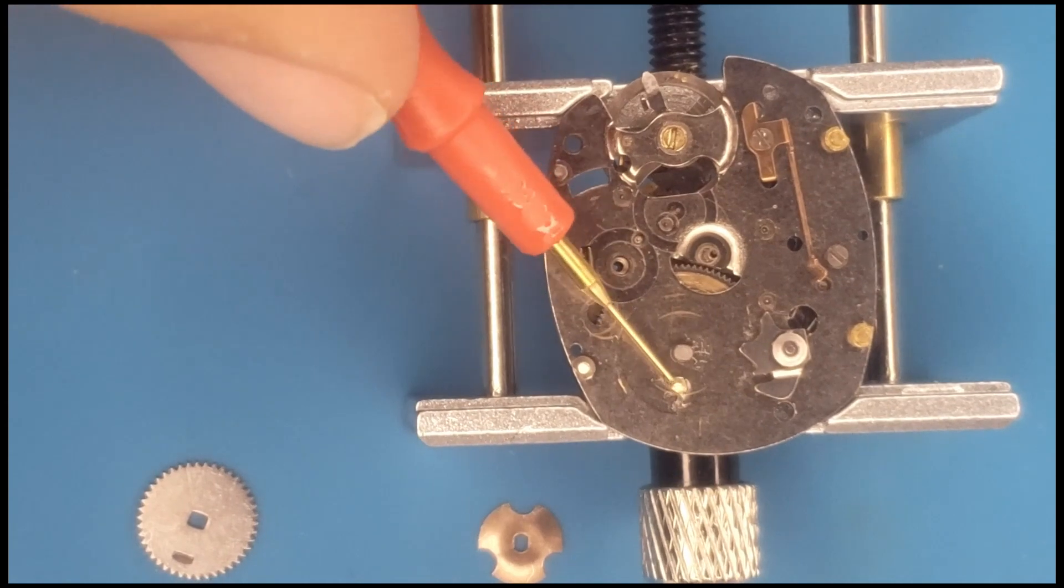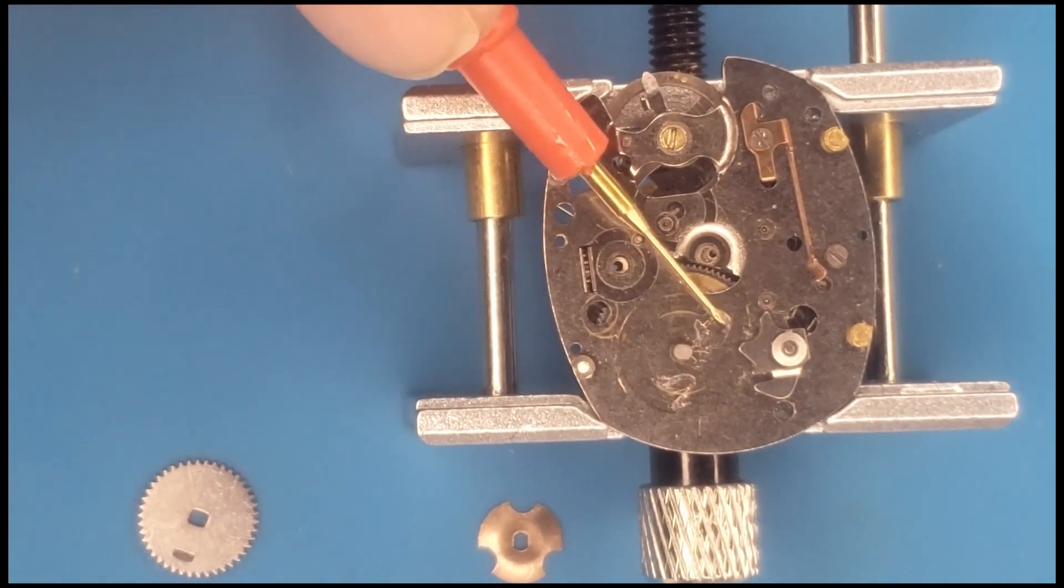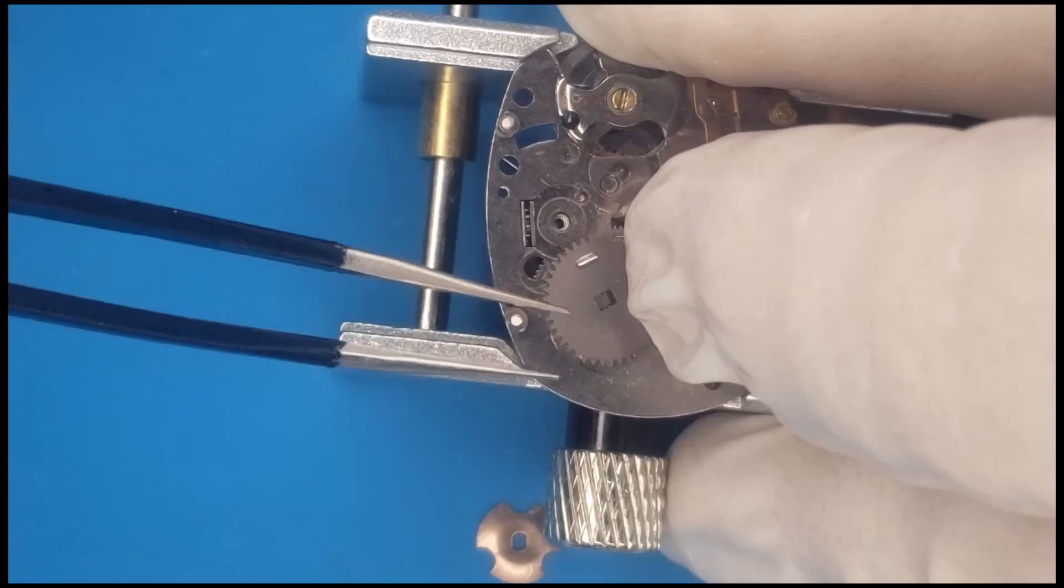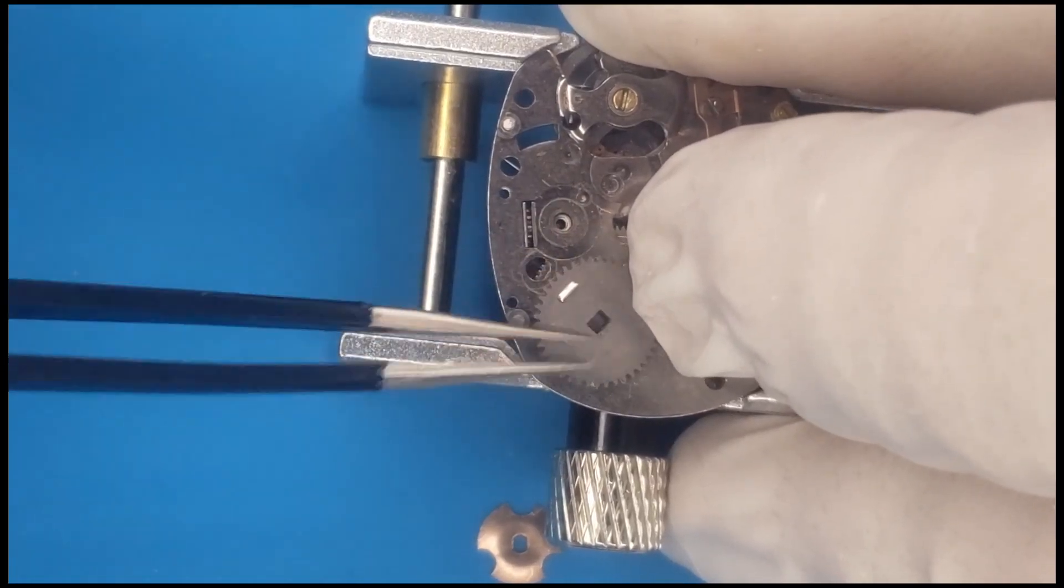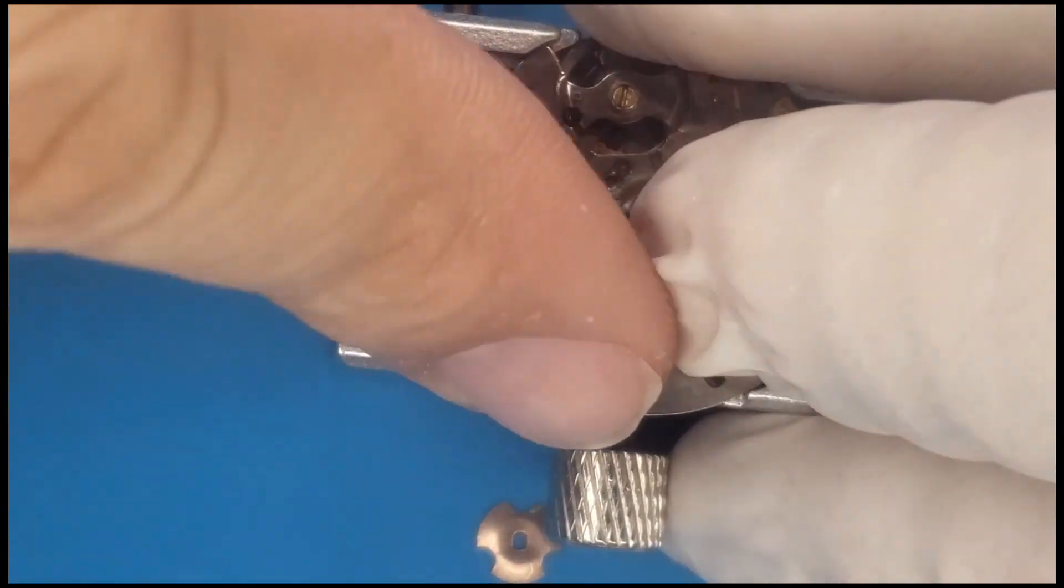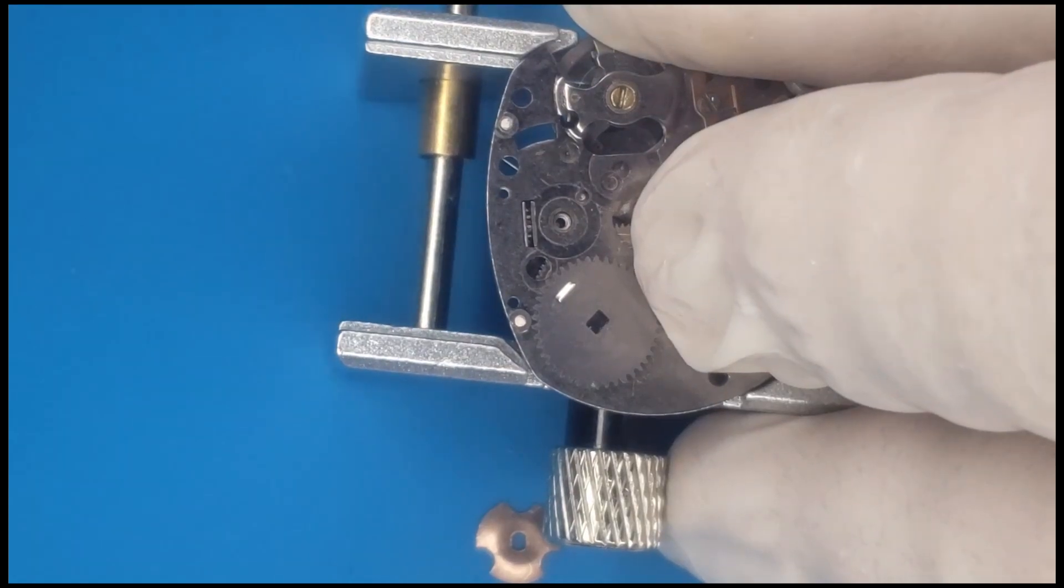And go ahead and grease up the crown wheel. And it's a little difficult to get that click spring in place, so I used a bit of pegwood here to make it stay.